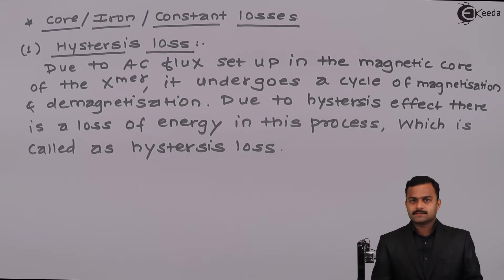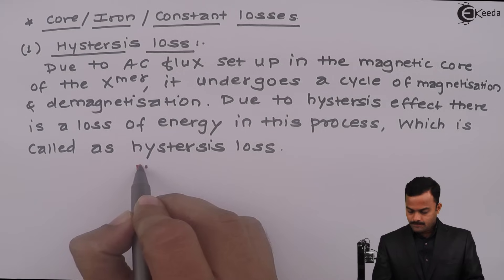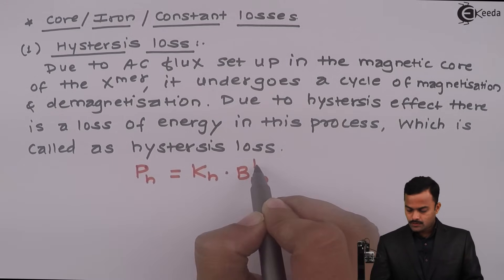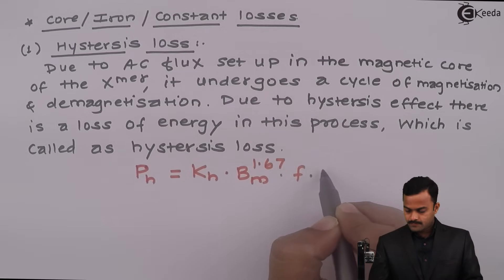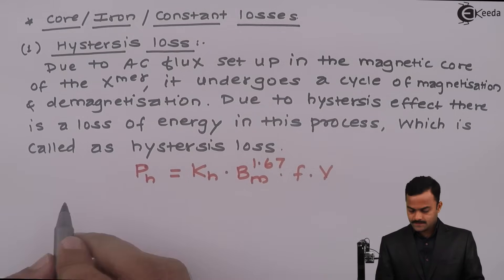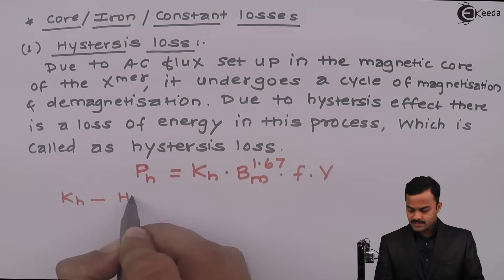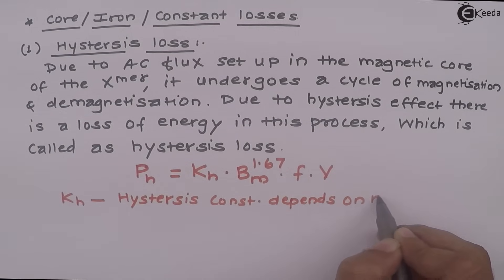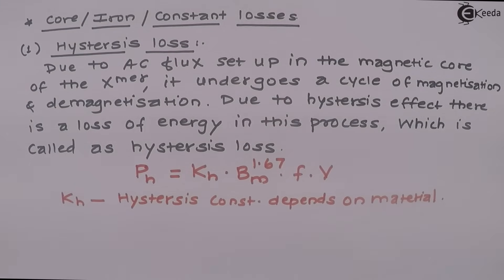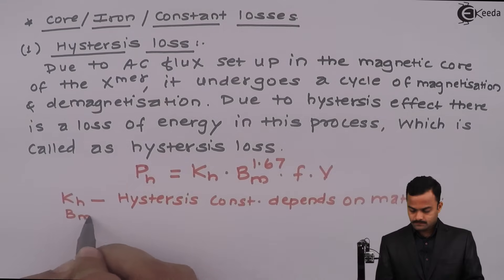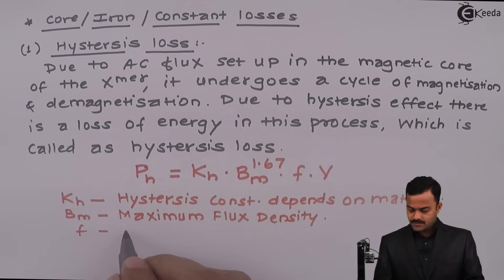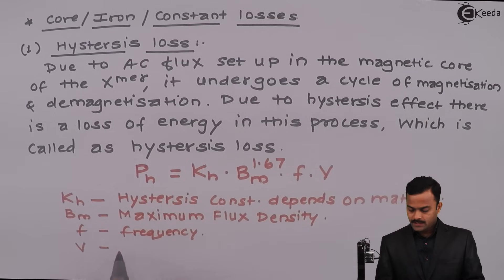Hysteresis loss depends upon what type of magnetic material we are using. The formula is: P_H = K_H × B_M^1.67 × F × V, where P_H is hysteresis loss, K_H is the hysteresis constant which depends on the material, B_M is maximum flux density, F is frequency, and V is the volume of the core.